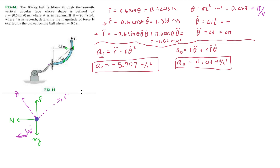From now on the problems get a bit harder — they won't all be five minutes long. We sum forces in the radial component equal to mass times radial acceleration. Remember, everything makes a 45° angle with the coordinate system, which makes it a bit easier.